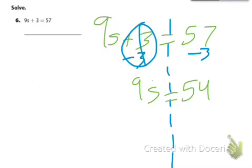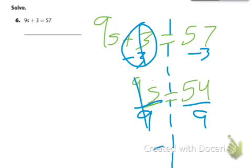Now we need to undo this multiplication, so divide by 9 on both sides. 9 divided by 9 is 1, which leaves us with s equals 54 divided by 9, which is 6. So s equals 6.